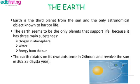The Earth is the third planet from the Sun and the only astronomical object known to support life. The Earth seems to be the only planet that supports life because it has three main substances: oxygen in the atmosphere, water, and energy from the Sun.